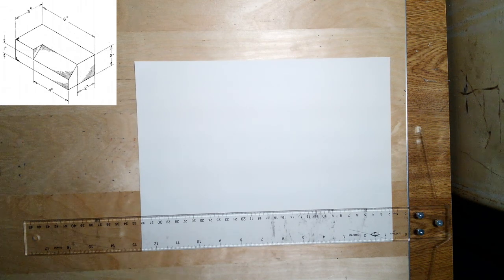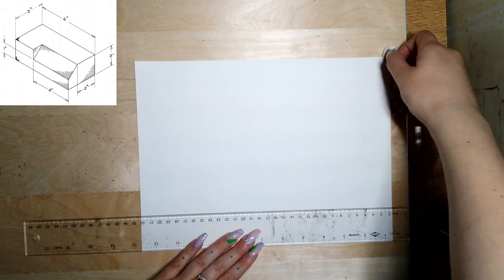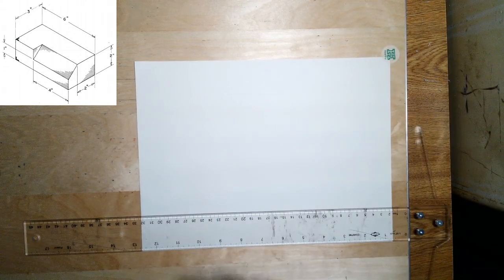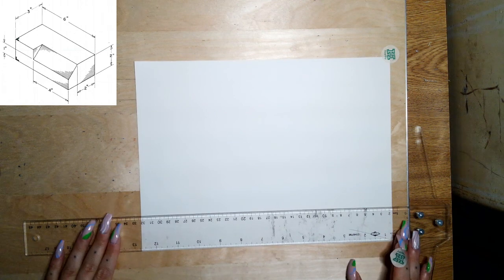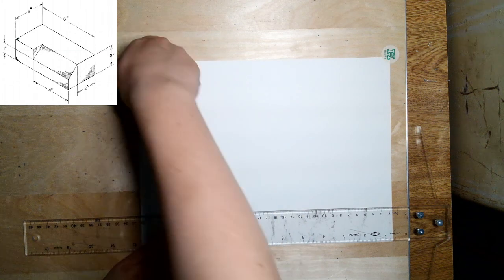But before that, we start off, of course, by taping our page down nice and straight and adding in our border and our title block.